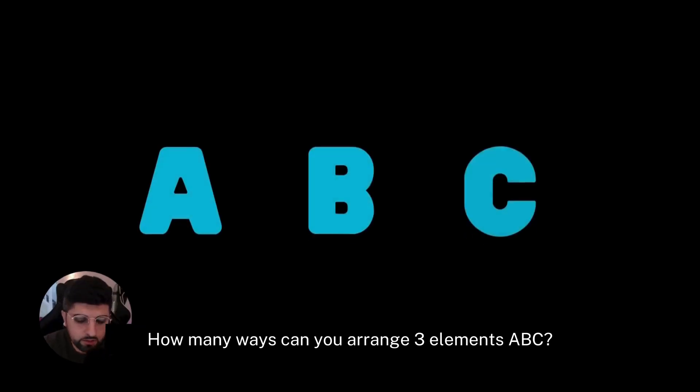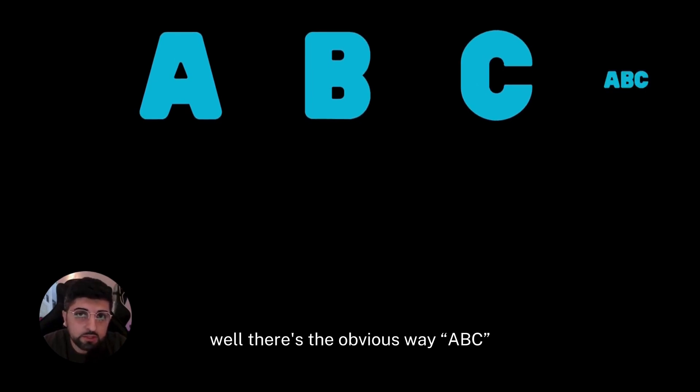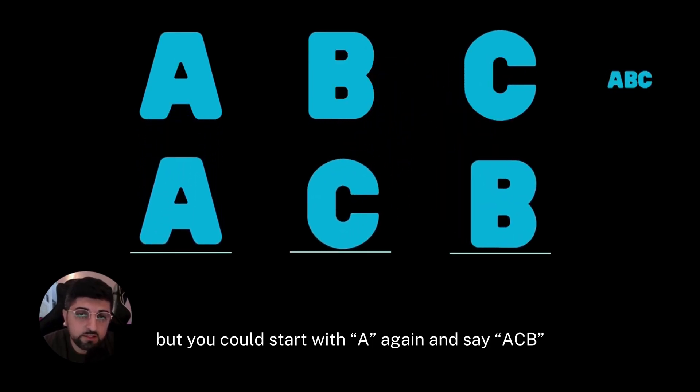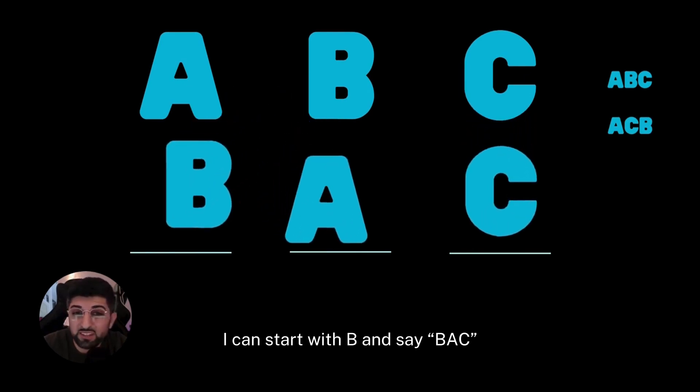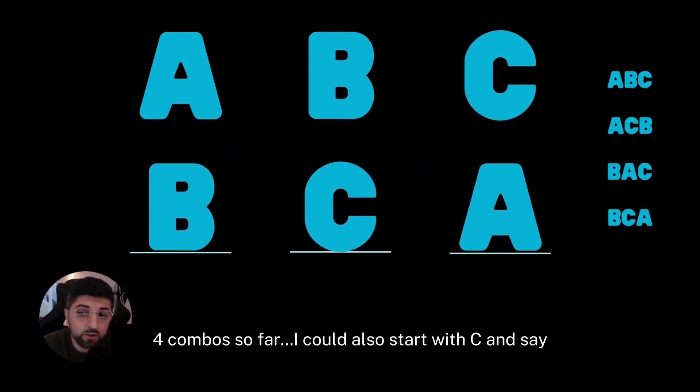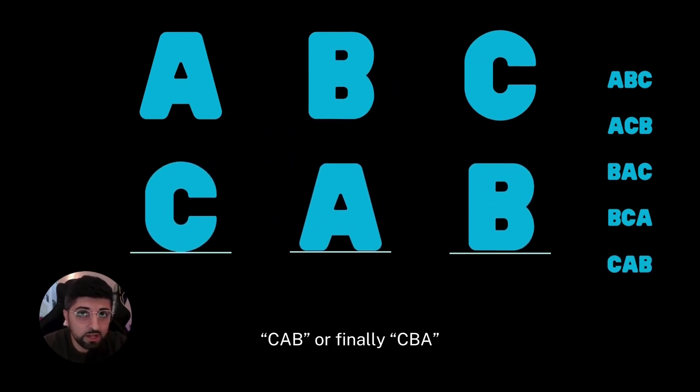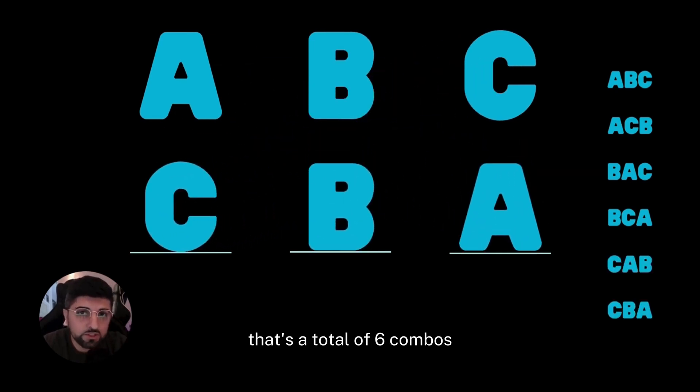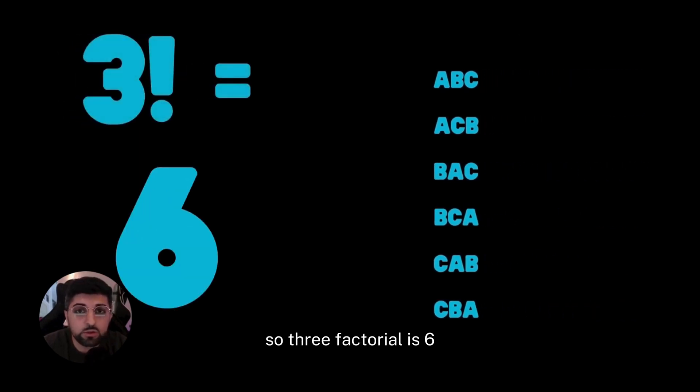Let's use an example. How many ways can you arrange three elements A, B, C? Well, there's the obvious way: ABC. But you could start with A again and say ACB. I could start with B and say BAC or BCA. I could also start with C and say CAB, or finally CBA. That's a total of six combos, so three factorial is six.